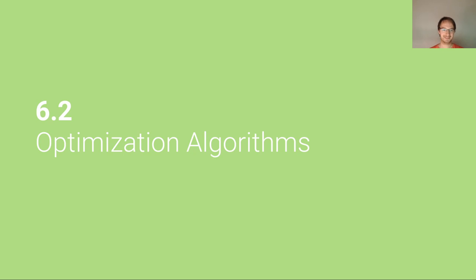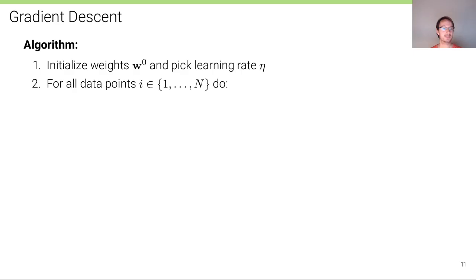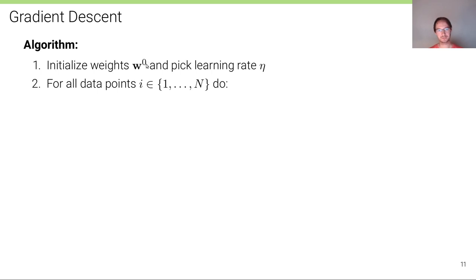In the second unit of this lecture, we're going to discuss various optimization algorithms. Let's start by reviewing the standard vanilla gradient descent algorithm. We start by initializing the weights w at time index zero, and by picking a learning rate, which is a scalar factor.